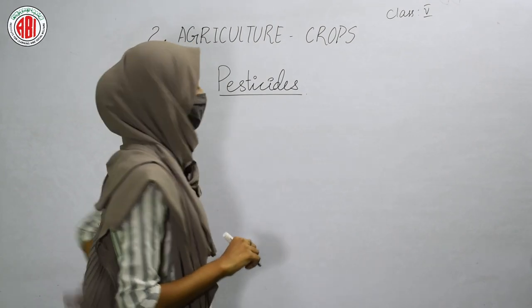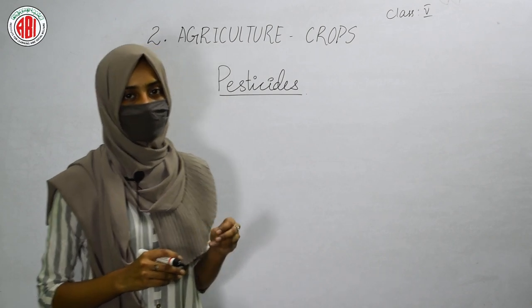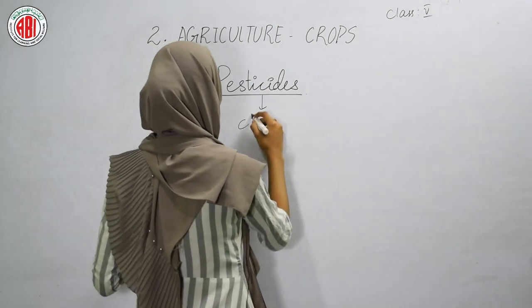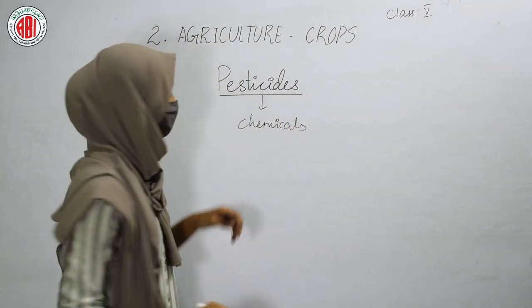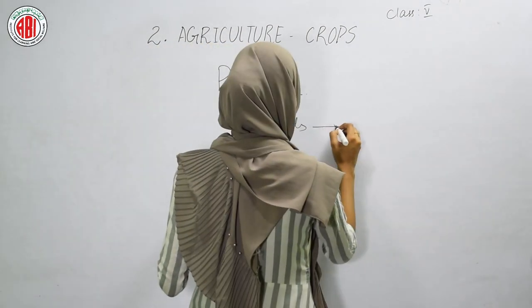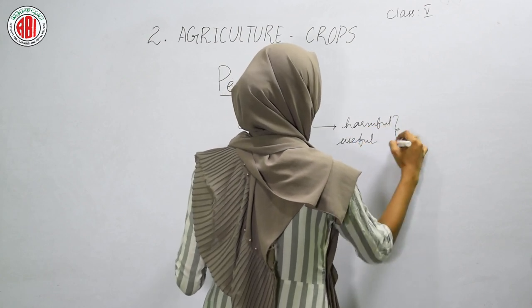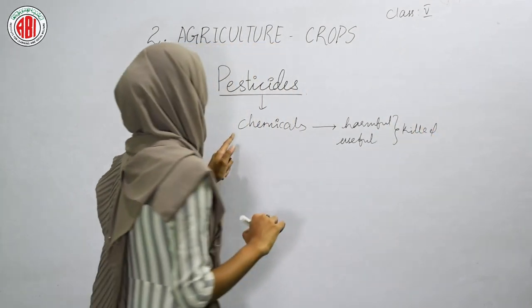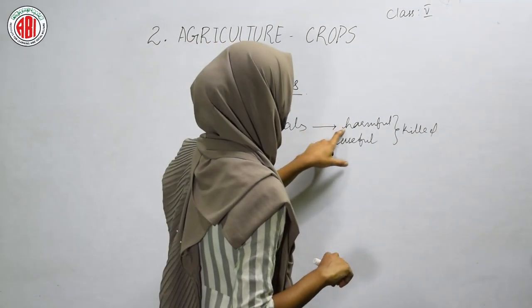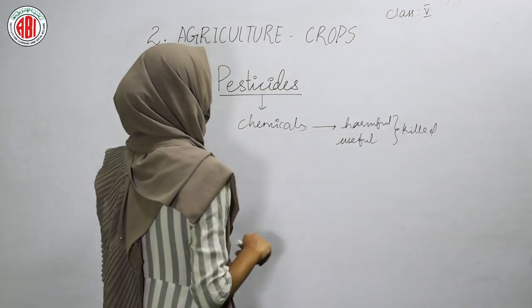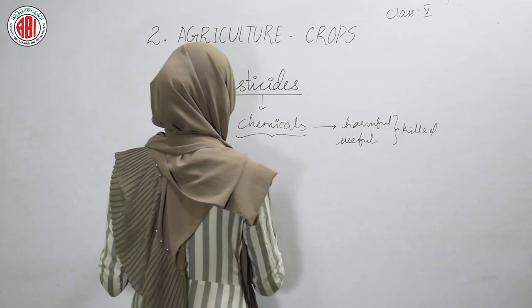What do you mean by pesticides? Pesticides are chemicals used by farmers to control pests in their fields. These chemicals are harmful to human beings and other living organisms. If farmers spray chemical pesticides, they harm not only harmful insects but also useful insects.